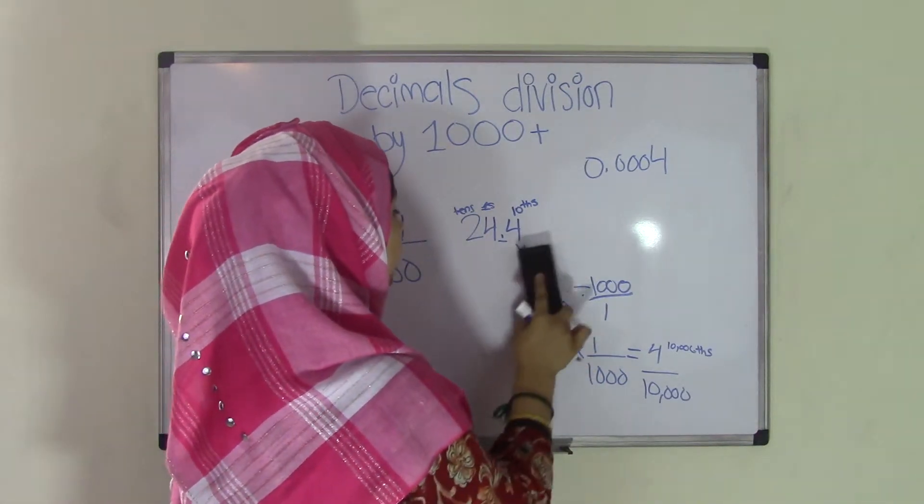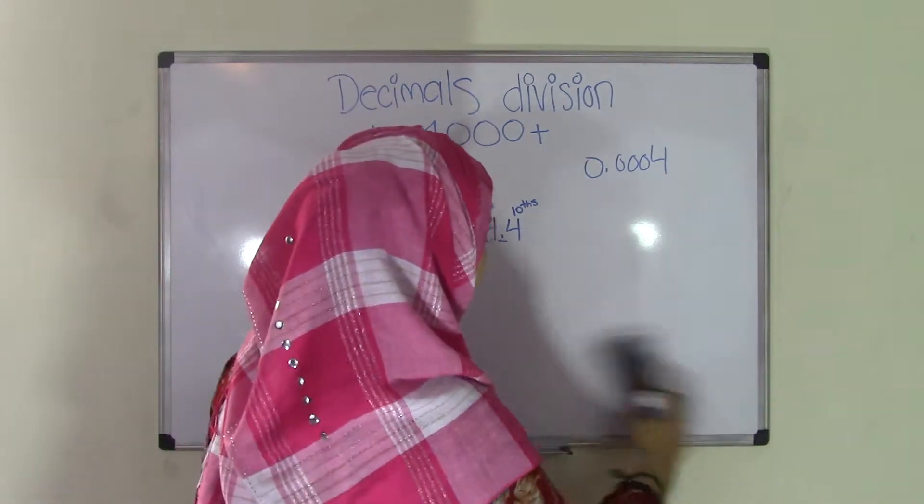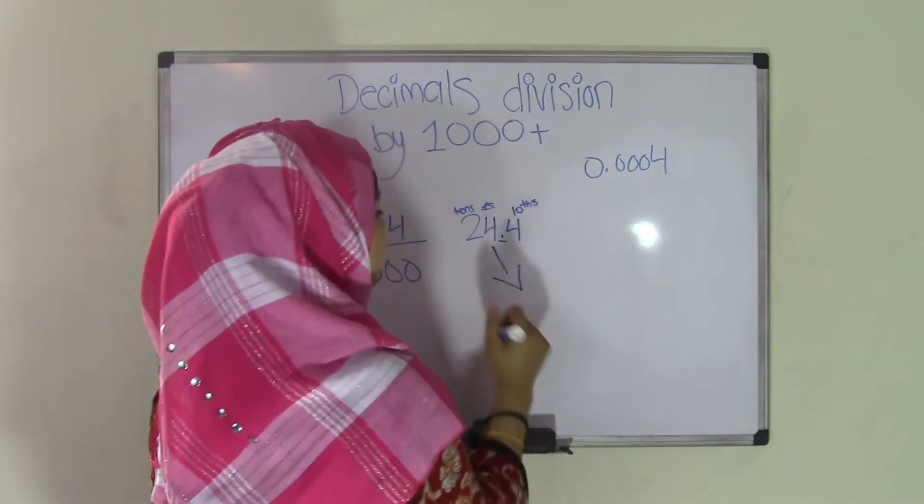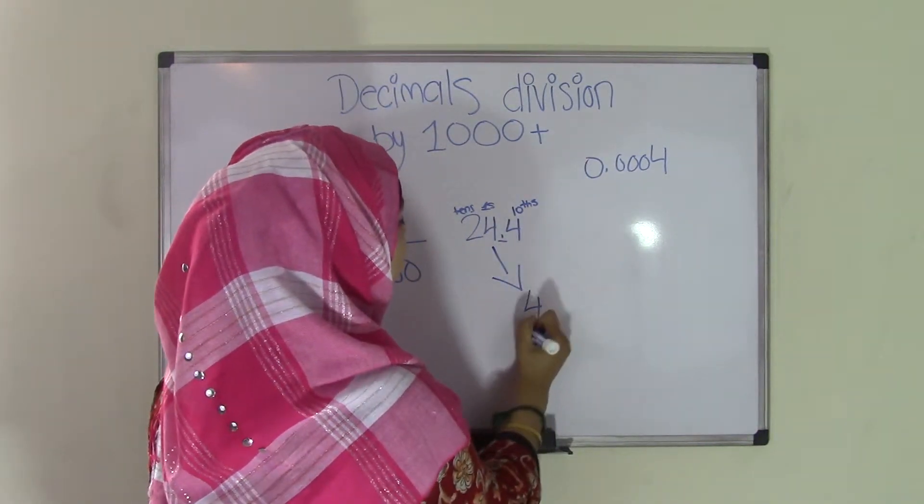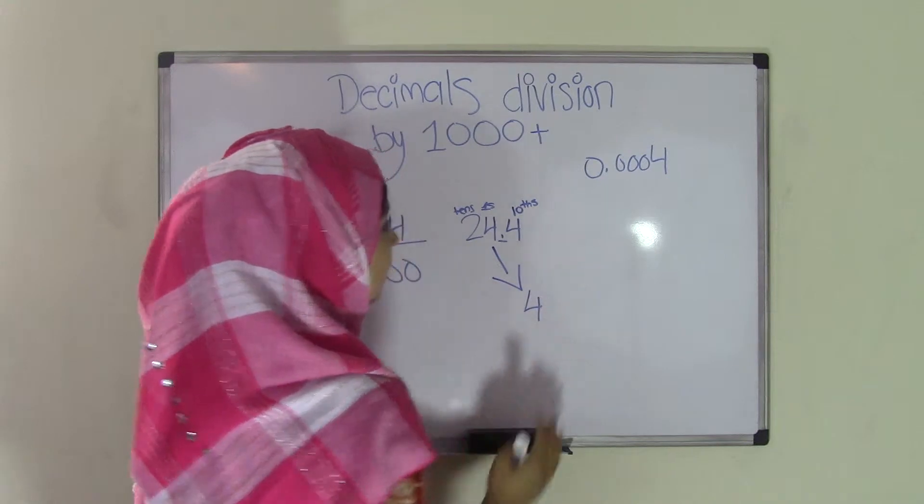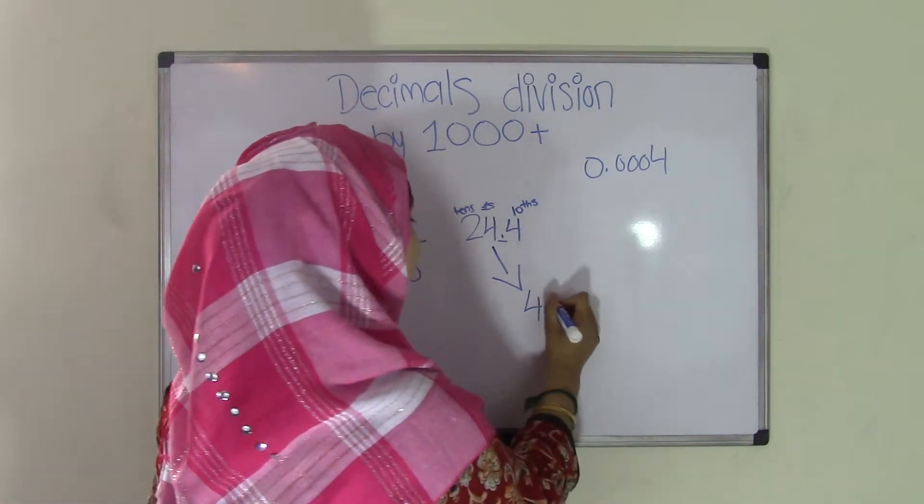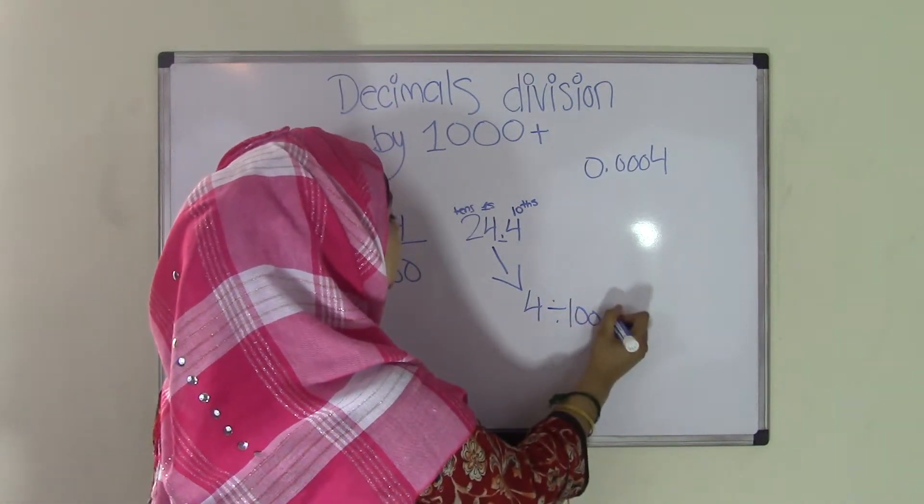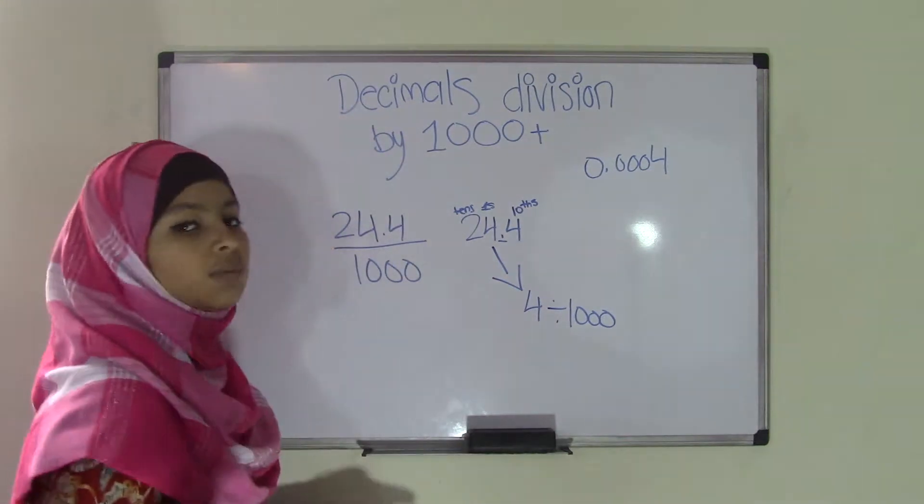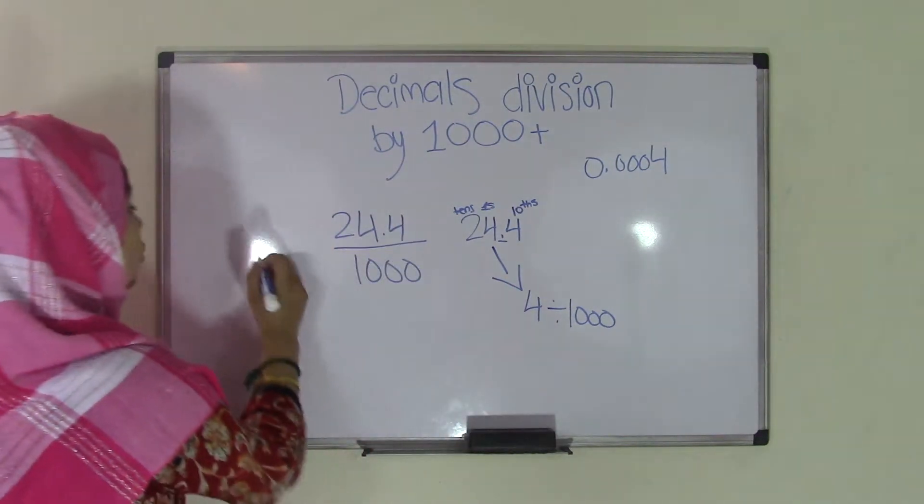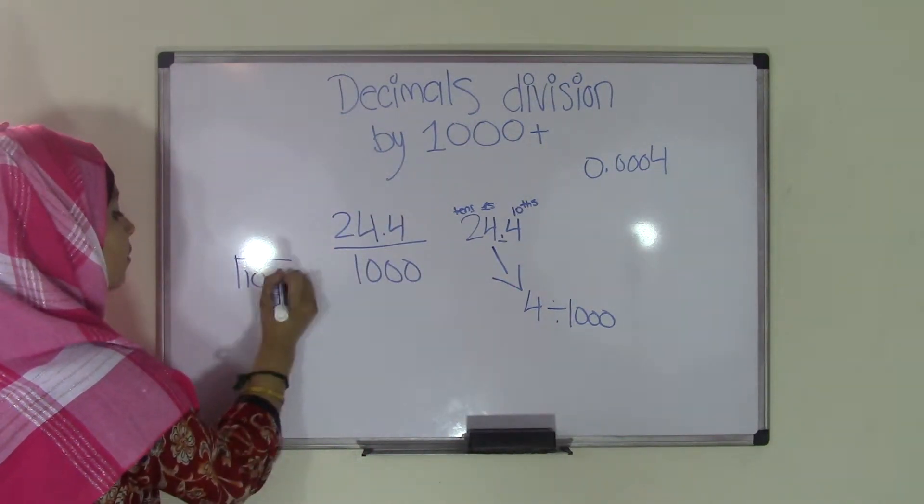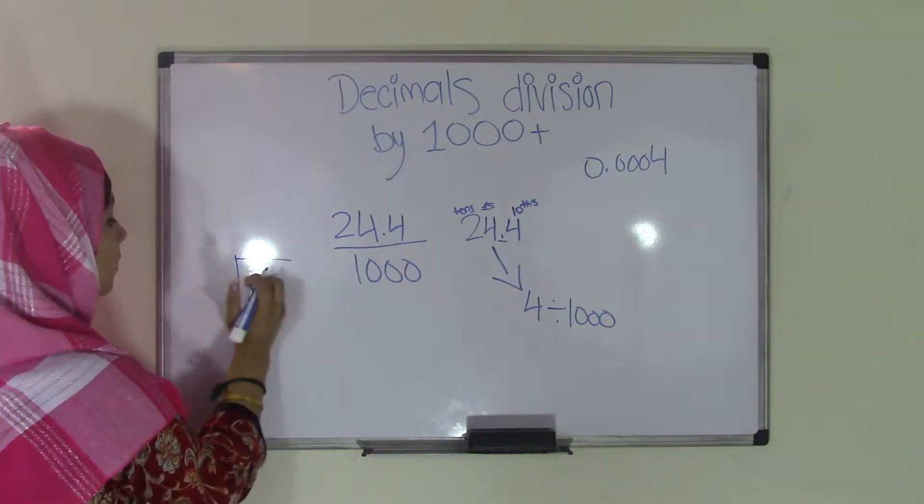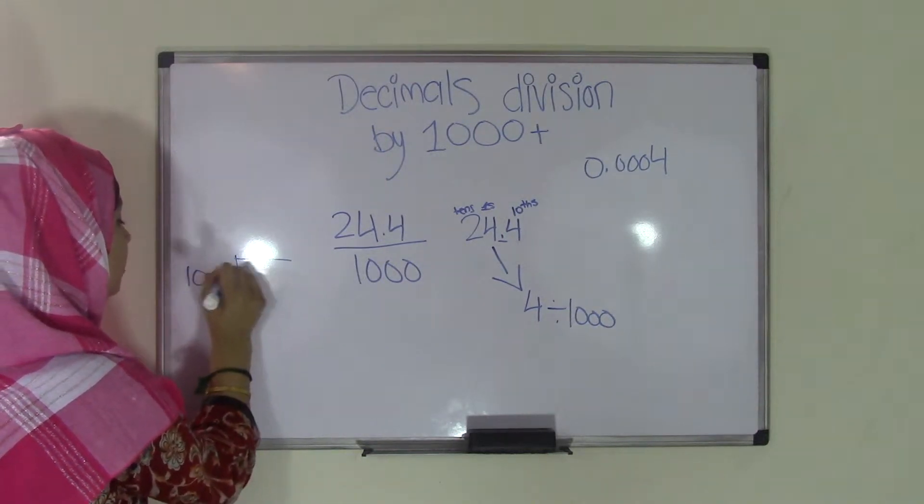Now if you come over here and do this for the 4, which is in the ones place. So in the ones place, it would become 4 because it's a whole number, divided by 1,000. So since these are whole numbers, you can just do simple division. So if you come over here and you write this, 1,000 is going to be divisor. So 1,000 divided by 4.